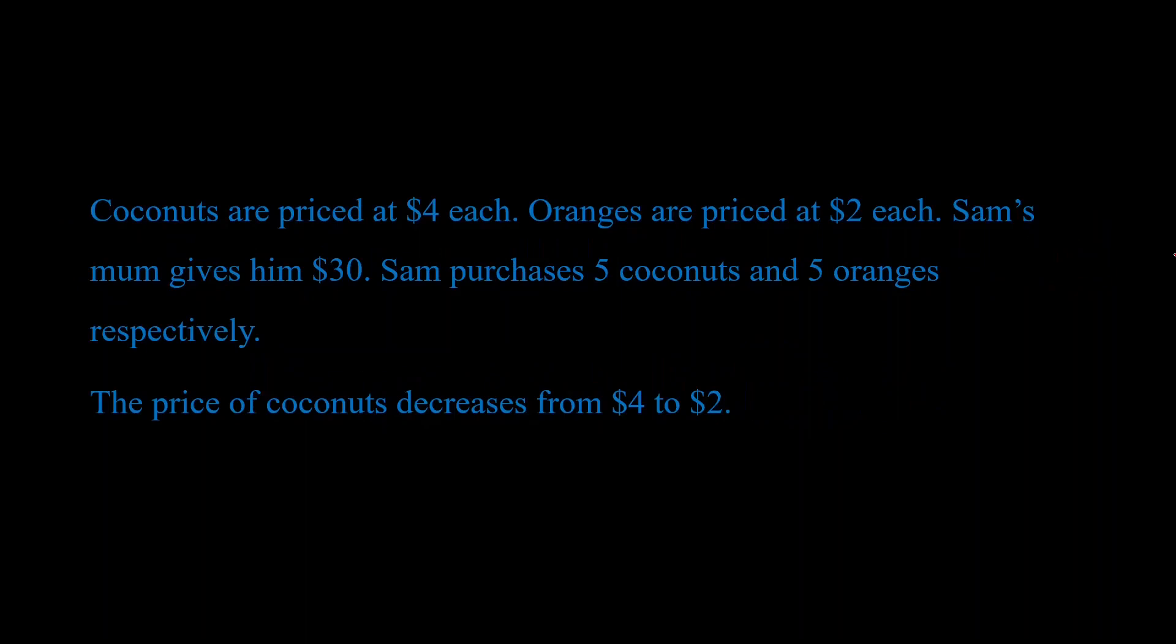I've conjured up an example to hopefully give you some intuition. So in our world we have coconuts that are priced at $4 each and we also have oranges that are priced at $2 each. Sam's mom gives him $30 and using those $30, Sam purchases 5 coconuts and 5 oranges. So this is Sam's original demand bundle, 5-5.